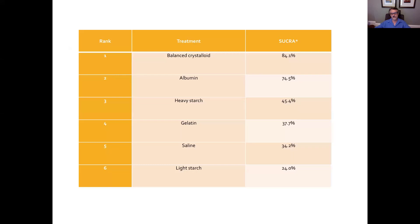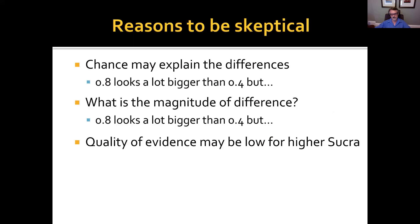And here are the SUCRAs for these 6 treatments. Balanced crystalloid is the winner, 84.1%, and then somewhat lower, and so on, down to light starch, which is only, its SUCRA is only 24%. So, if you were taking a really, somewhat superficial anyway, approach to this, you'd say, okay, balanced crystalloid's the best, 84.1%, I'm going to give all my patients balanced crystalloid. But, would you be doing a good thing? Maybe, and maybe not.